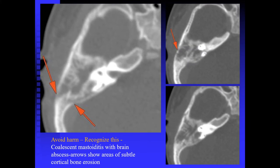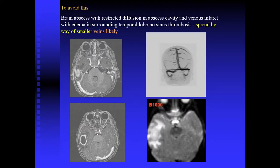What are residents failing to observe? To make a proper diagnosis, they're failing to observe dehiscence of the sigmoid plate and dehiscence of the mastoid cortical bone — that's coalescent mastoiditis. If you're not taught that, you'll miss the diagnosis. What are we trying to avoid? Intracranial extension, vein of Labbé occlusion, thrombophlebitis, and brain abscesses, which in the dominant hemisphere can be quite devastating. That's the harm we're trying to avoid.